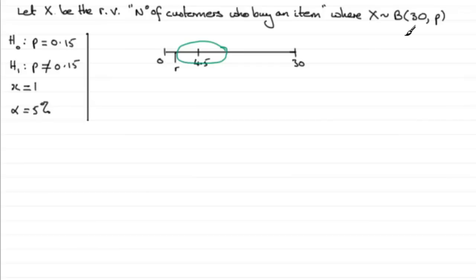So we've got a situation where we can expect something around 4.5, but we've got a critical value here - let's call it R. This critical value is a point where if we're below it, then we reject H₀, and if we're above it, we accept H₀.